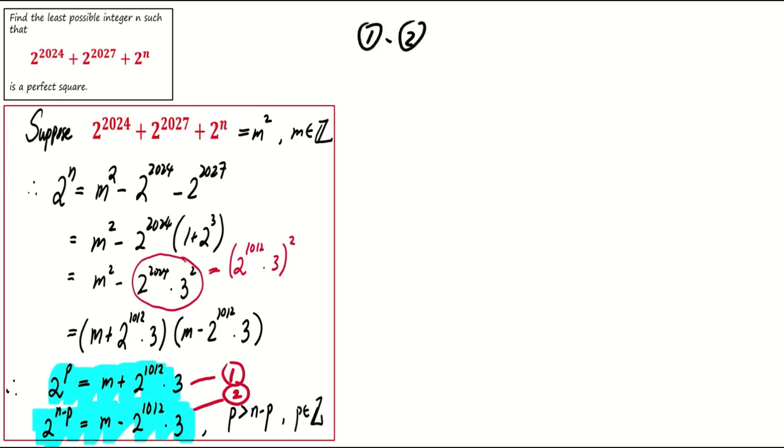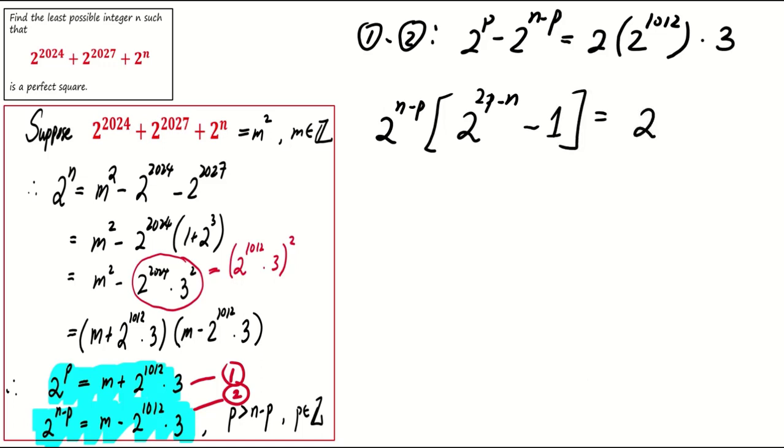Consider equation 1 minus equation 2. We obtain 2 to the power of p minus 2 to the power of n minus p equals 2 times 2 to the power of 1012 times 3. For the left-hand side, we can factor out 2 to the power of n minus p, yielding 2 to the power of n minus p times 2 to the power of 2p minus n minus 1, which equals 2 to the power of 1013 times 3.